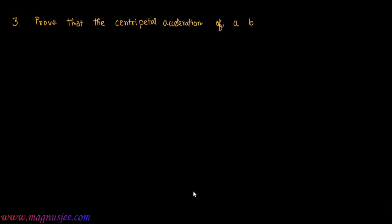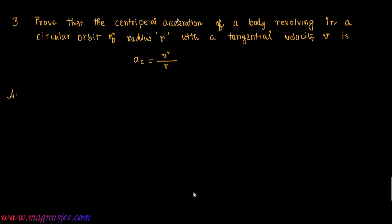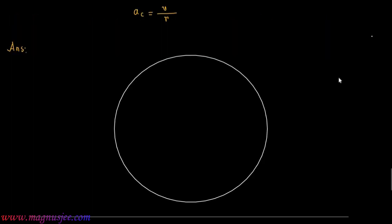To prove that the centripetal acceleration of a body revolving in a circular orbit of radius R with a tangential velocity V is ac equal to V squared by R.